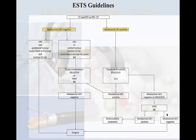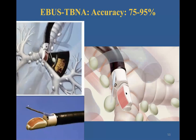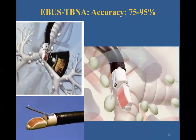EBUS-TBNA is fundamentally a high-technology fiber-optic bronchoscopy with a channel designed for a needle and an ultrasonography probe to see and discriminate lymph nodes from the pulmonary artery, pulmonary vein, or aorta. Bronchoscopists can describe lymph nodes very clearly with the aid of ultrasonography. It is a biopsy method, not a dissection method, and lymph nodes can be biopsied with the needle.